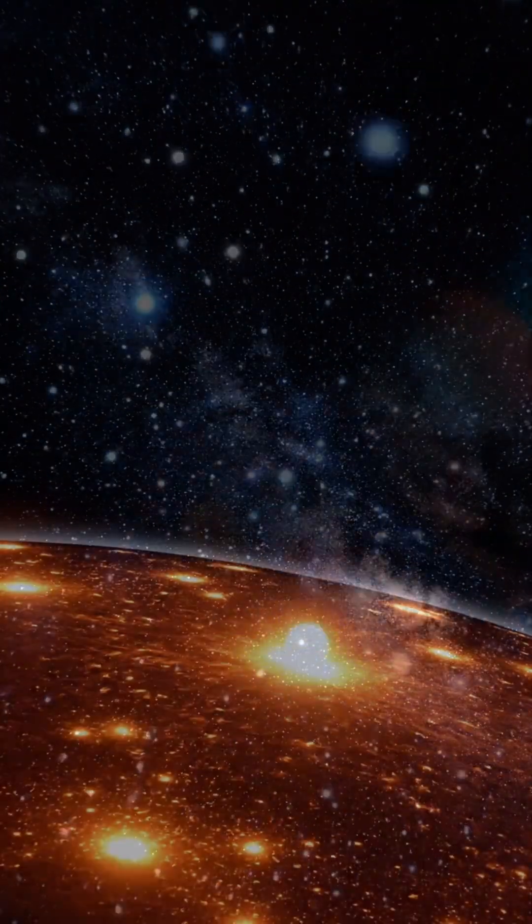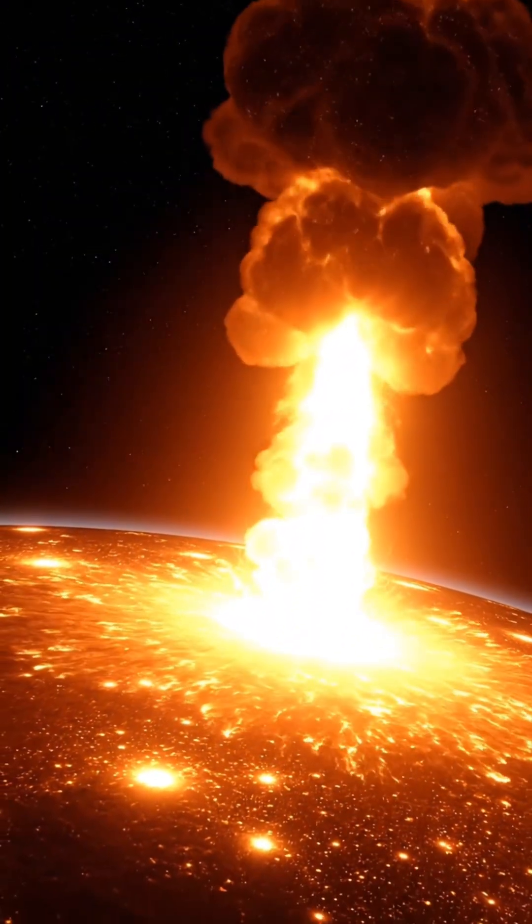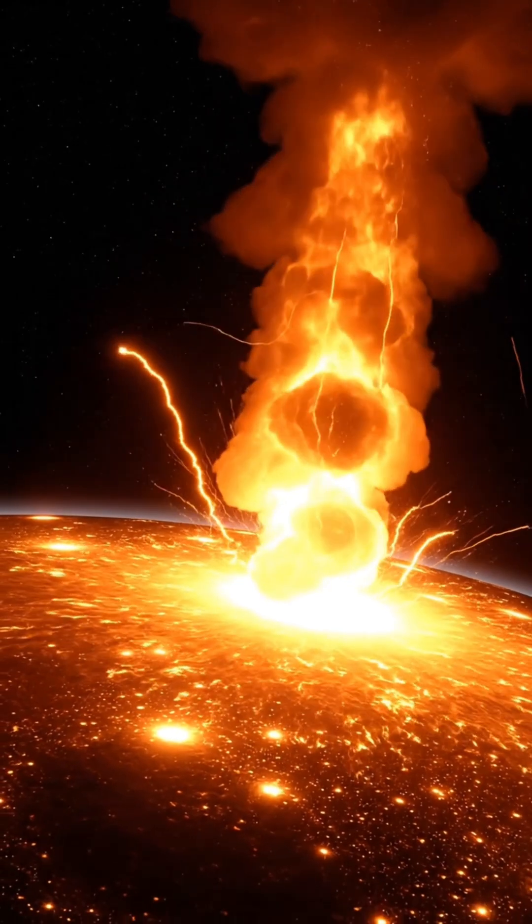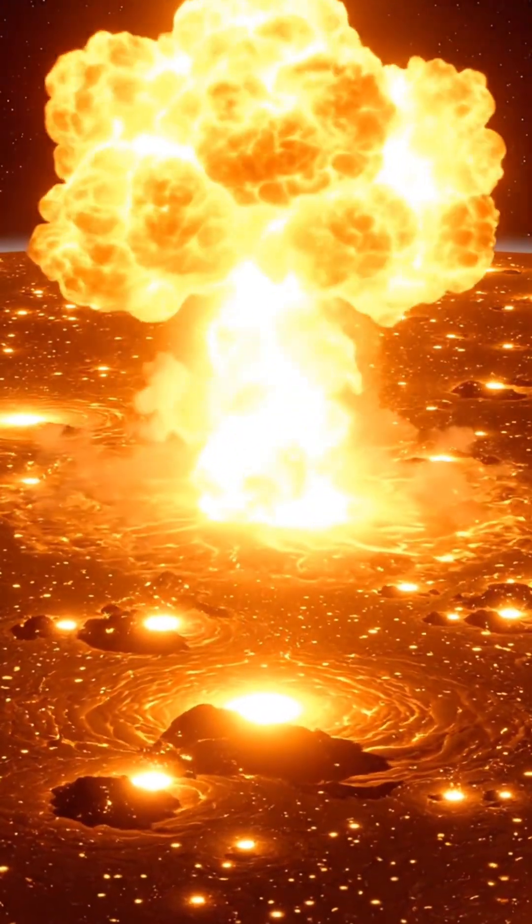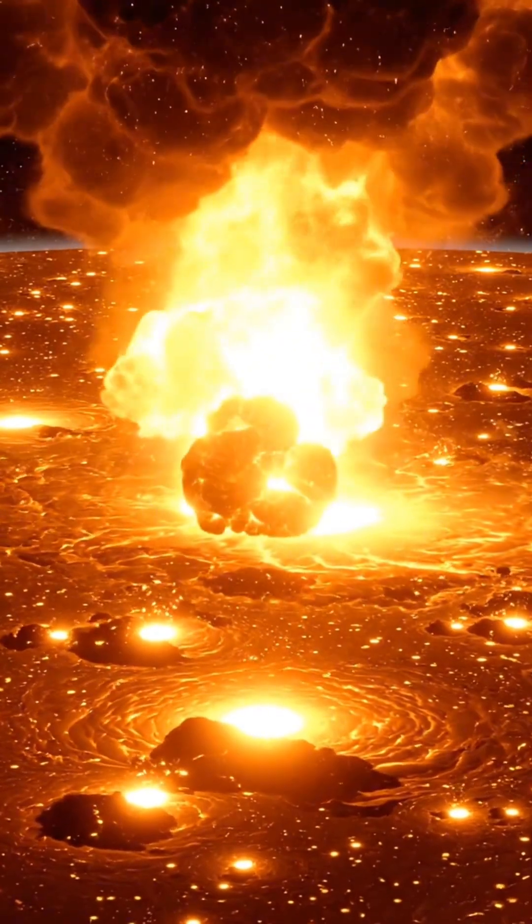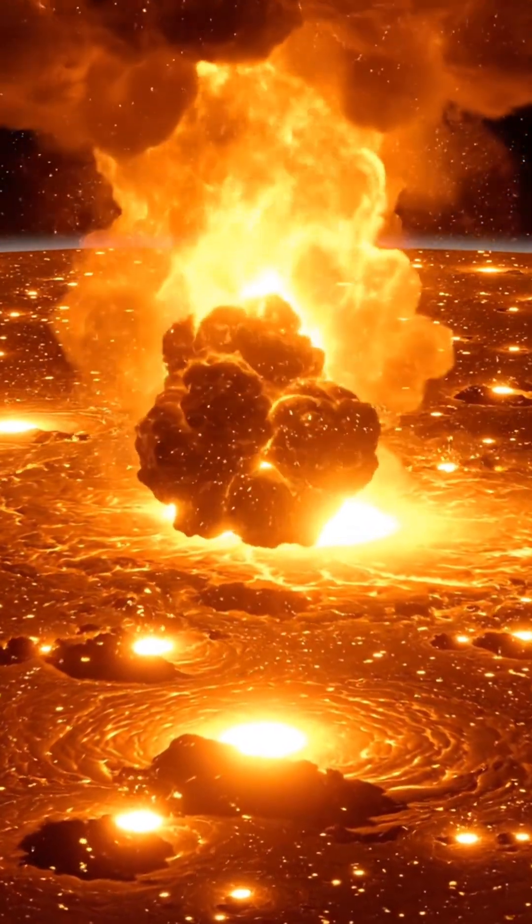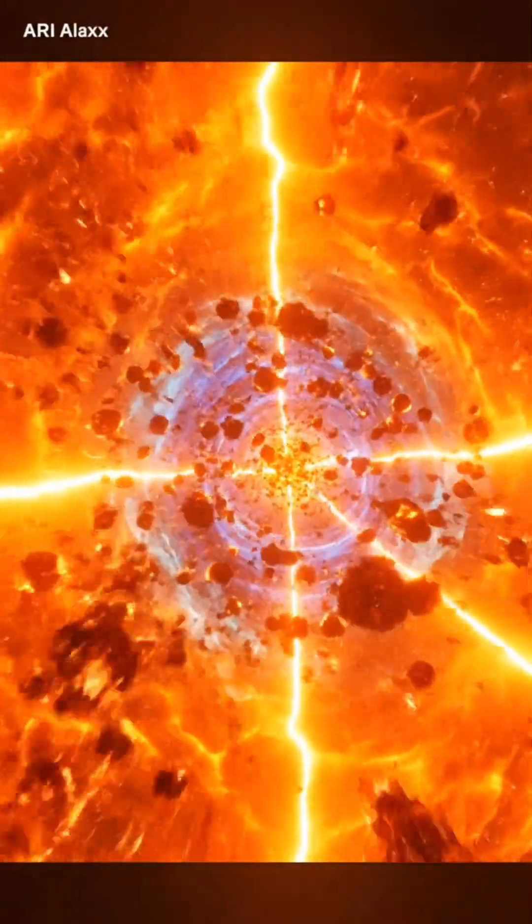Our Sun is roughly 4.6 billion years old, halfway through its expected prime. For the next 5 billion years, it will continue to fuse hydrogen in a desperate effort to hold off collapse. But that energy source is finite.